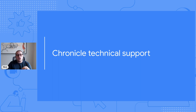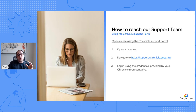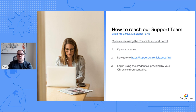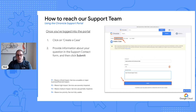So first, let's cover how to reach out to Chronicle technical support — this is very important. In order to reach Chronicle technical support, you need to open a case via the support portal. All you do is open a browser, navigate to support.chronicle.security, and then log in using the credentials that were provided to you by your Chronicle representative. Once you've logged into that portal, all you have to do is click on create a case, and then provide information about your question in the support contact form.